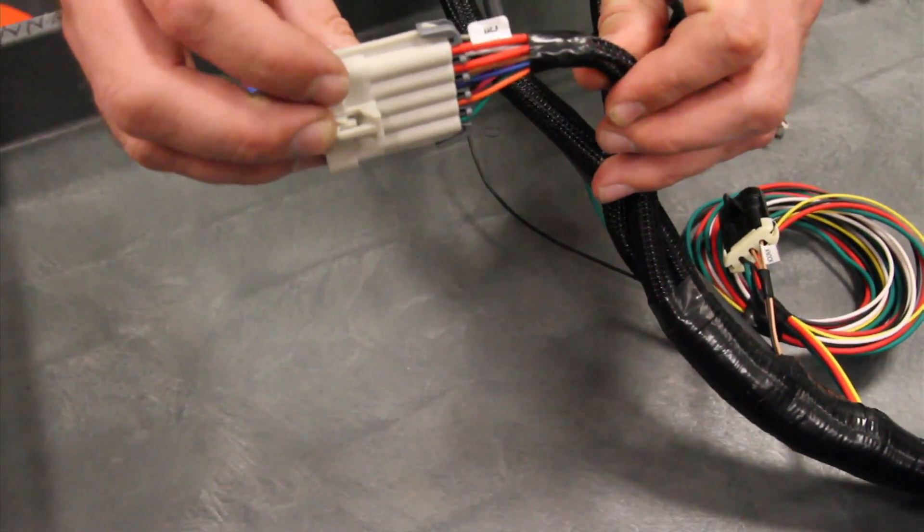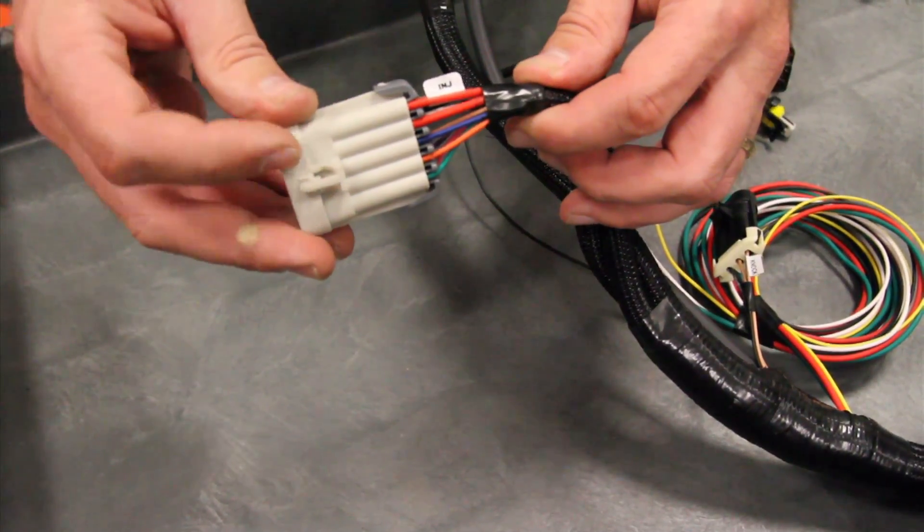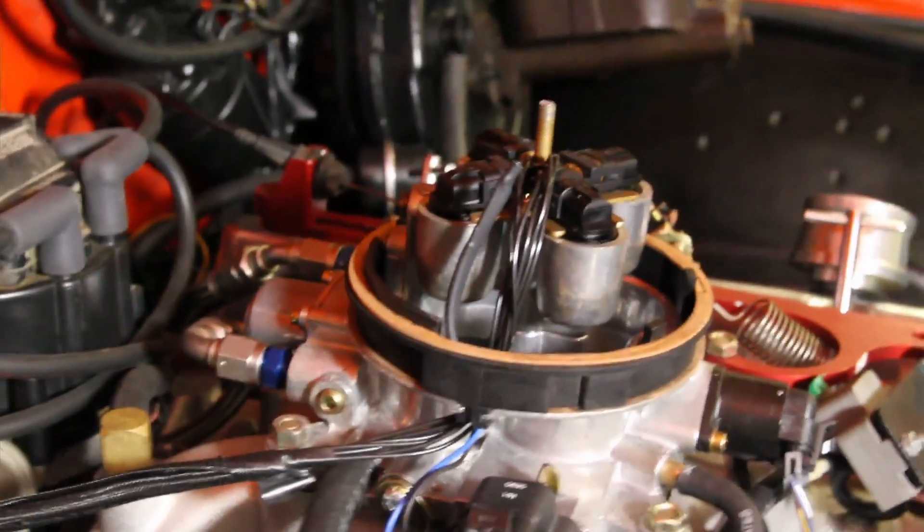This 10 pin connector is for the fuel injectors. It's marked INJ. This plugs directly into the injector harness that's supplied with your kit, whether you're using TBI injectors or multi-port fuel injection.